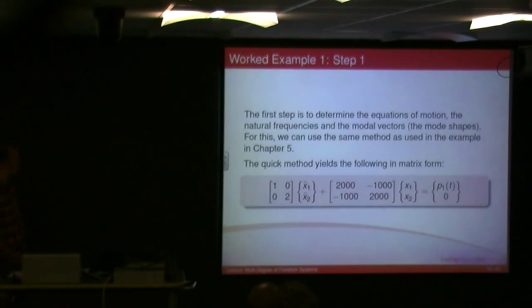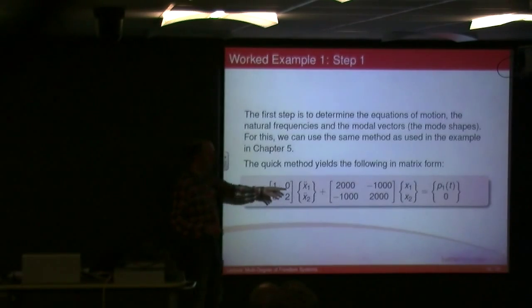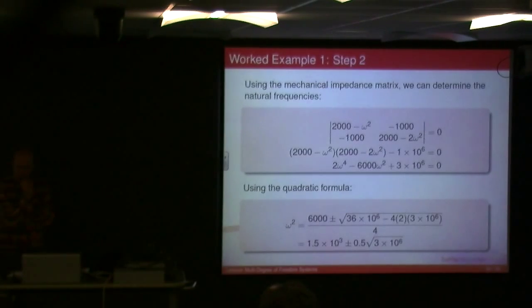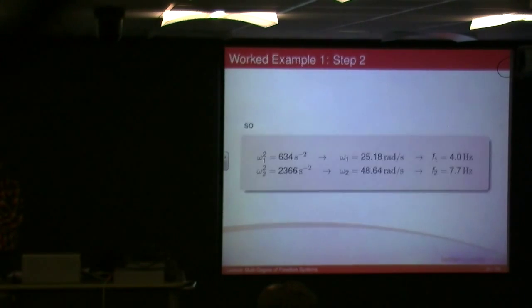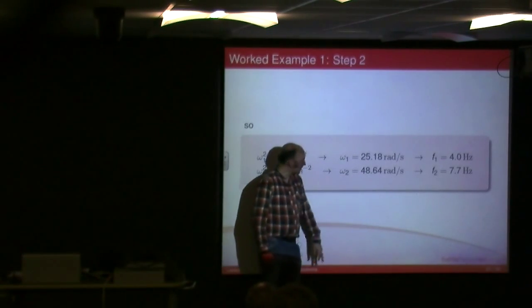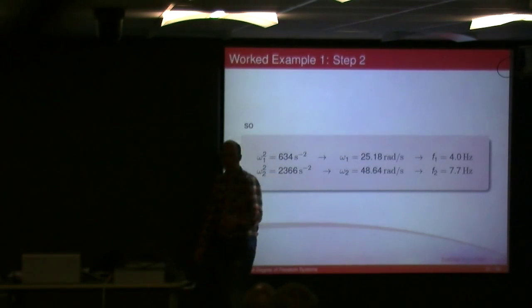So, that's my, obviously, it was kilonewton per meter, hence the reason it's 2,000 and 1,000, as opposed to 2 and 1. There's my equation of motion. I find the mechanical impedance matrix, take the determinant to get my natural frequencies, I end up with a quadratic in terms of omega squared, and I can find the natural frequencies, 1,500 plus or minus 0.5 times 3,000, the square root of 3,000. And so if I go through, I end up getting 25.18 radians per second for one of them, and then 68.46 radians per second for the other one, and that translates to 4 hertz or 7.7 hertz.